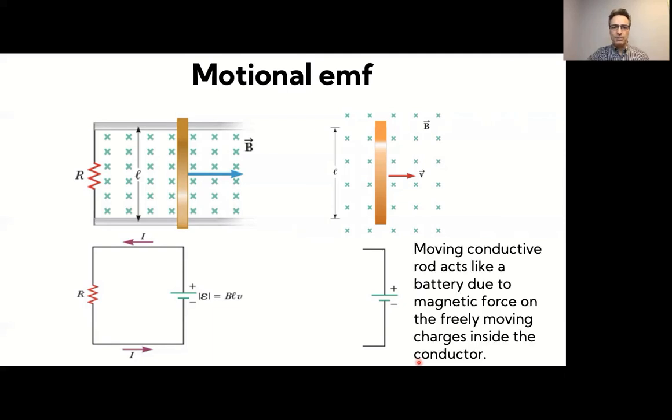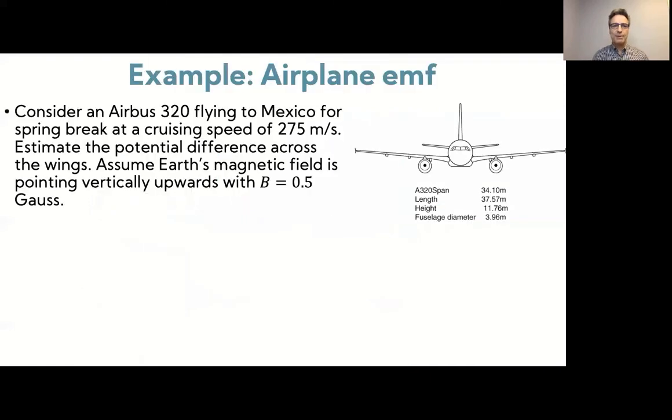And so the bottom line is that if you move any conductor in a magnetic field, essentially it acts like a battery. And that's purely due to the magnetic force on the free moving charges inside that conductor. And so you can look at a few examples.